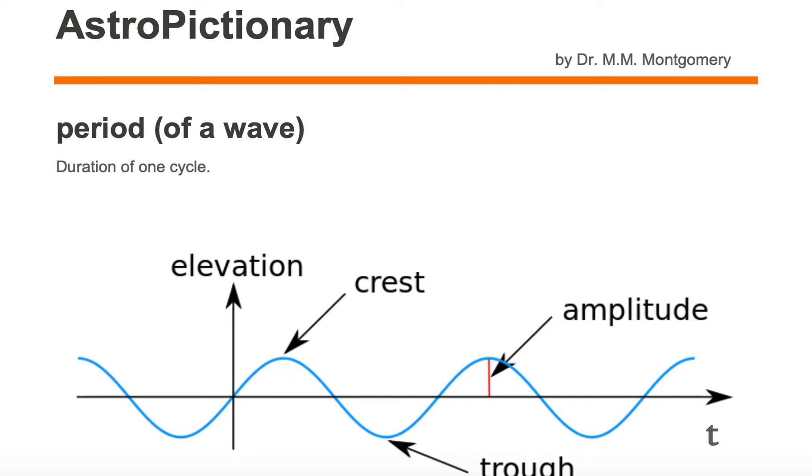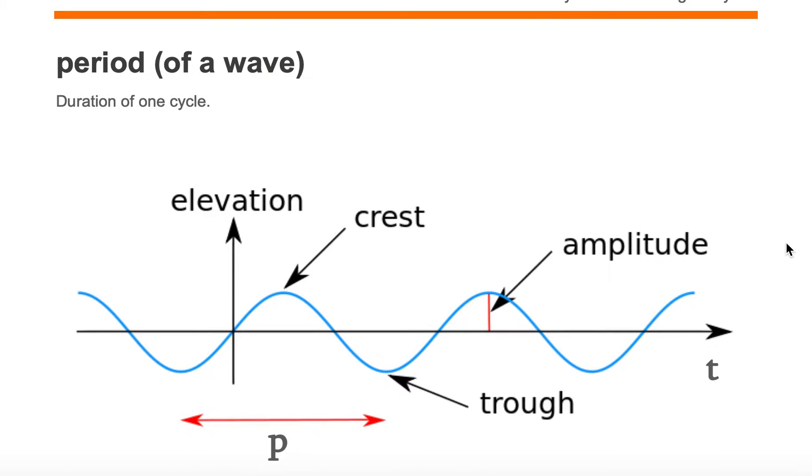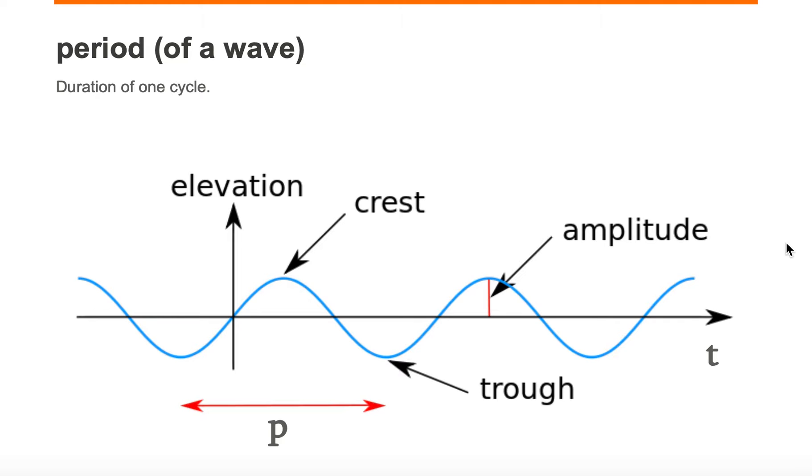The period of a wave is the duration of one cycle. A cycle is something that repeats, so we want to find the time it takes for the cycle to repeat, otherwise known as the period P.